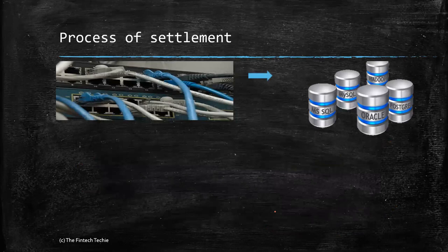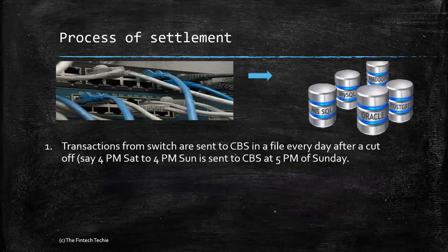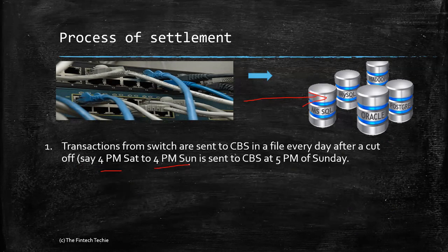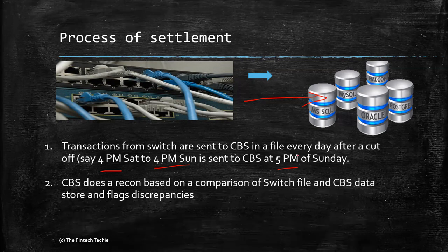Looking at the process of settlement, there are three areas. Number one, the transactions from the switch are sent to the CBS every day after a cutoff time — for example, from 4 p.m. Saturday to 4 p.m. Sunday, all transactions during this period are settled at 5 p.m. Similarly, 4 p.m. Sunday to 4 p.m. Monday will settle at 5 p.m. Monday, and so on. CBS does a recon based on comparison of the switch file and the CBS data store, and flags any discrepancy in the form of reports.